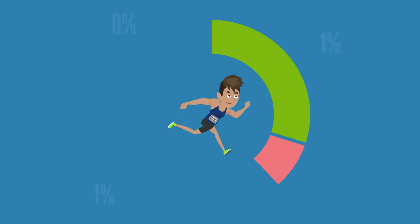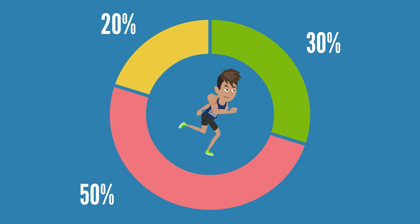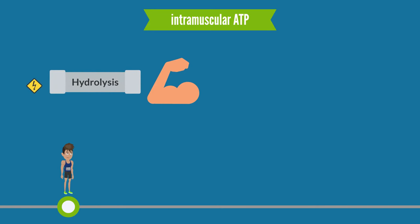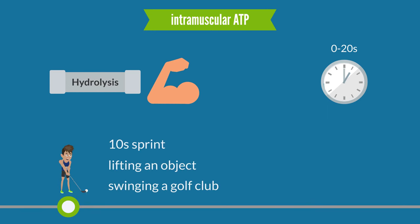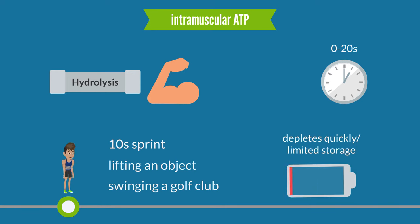The relative percentage each system contributes to ATP production differs depending on the intensity and duration of physical activity. During the onset of exercise, intramuscular ATP transfers energy firstly and instantly via hydrolysis. Intramuscular ATP is the primary contributor for exercise lasting only a few seconds, such as a 10-second sprint, lifting an object, or swinging a golf club. However, intramuscular ATP storage is limited and depletes within a few seconds of exercise.